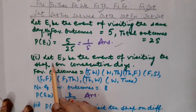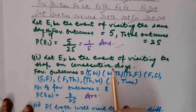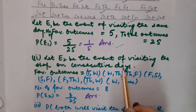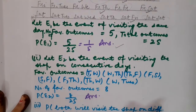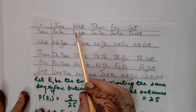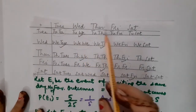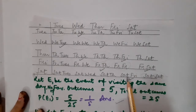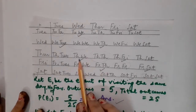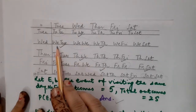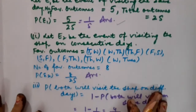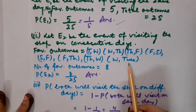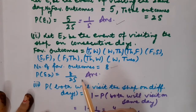Part 2: Let E2 be the event of visiting the shop on consecutive days. Consecutive days are days that come just after each other. The favorable outcomes are: (Tuesday, Wednesday), (Wednesday, Thursday), (Thursday, Friday), (Friday, Saturday), (Saturday, Friday), (Friday, Thursday), (Thursday, Wednesday), and (Wednesday, Tuesday) — 8 outcomes in total. So the probability is 8/25.